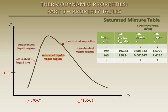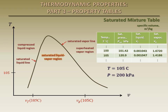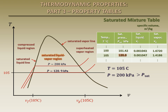Let's look at some examples of how we can use this table to determine which region on the diagram a given substance is in. Suppose we have water at a temperature of 105 degrees Celsius and a pressure of 200 kilopascals. We know that it must lie somewhere along this line. From the table, we see that the saturation pressure at the given temperature is 120.9 kilopascals. Because the given pressure is greater than the saturation pressure, it must lie on a higher constant pressure line.